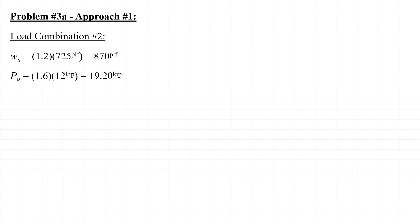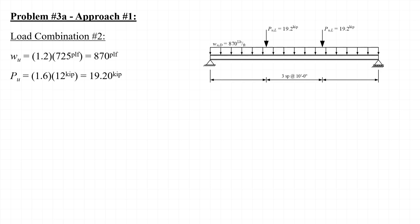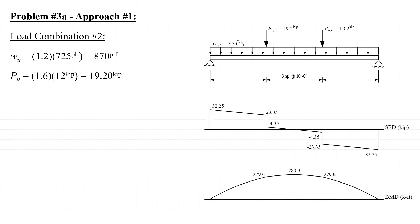Still using approach number one, we'll now apply the load factors included in load combination number two. The resulting factored dead load has a magnitude of 870 pounds per linear foot, and the factored live loads each have a magnitude of 19.2 kips. Note that a subscript u for ultimate is used to indicate that these loads have been factored. From this loading, the maximum shear force still occurs at each end of the beam with a magnitude of 32.3 kips, and the maximum bending moment occurs at mid-span with a magnitude of 290 kip-feet.